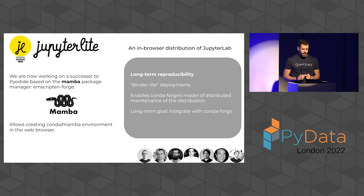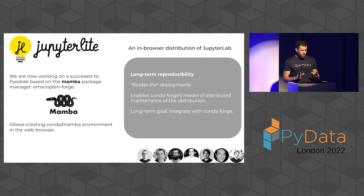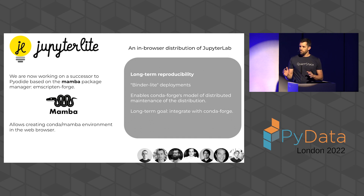On top of JupyterLite, we're now working on the successor to Pyodide based on the Mamba package manager. Mamba is a C++ re-implementation of Conda that produces a much faster experience and can also be built in WebAssembly. The goal of this new distribution — called Emscripten-forge — is to enable long-term reproducibility and binder-like environments, so you can distribute all required packages for a given computation as a bundle alongside your notebook on a web page without any server infrastructure.